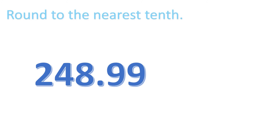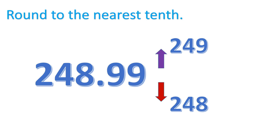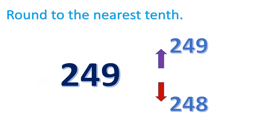Another example: 248 and 99 hundredths. We are tasked to round this to the nearest tenth — so it's either it will go up to 249.0 or retain to 248.9. Since the right side of the tenths place is 9, then we are going to round up to 249.